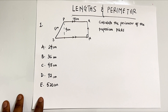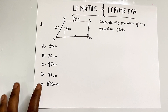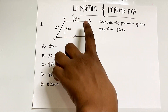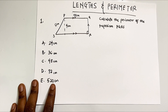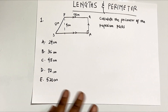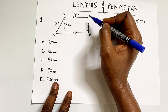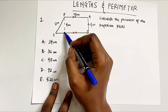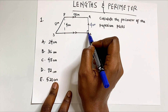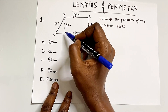Question one gives a diagram of a trapezium and says: calculate the perimeter of trapezium PQRS. The idea of perimeter is the addition of all the sides. If you notice, we don't have all the side lengths — we have 4 cm here, which is the same value on the other side, 4 cm. We just don't have the full length of the bottom.